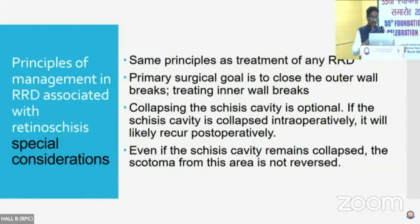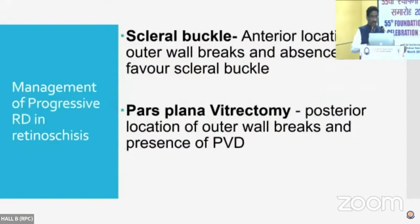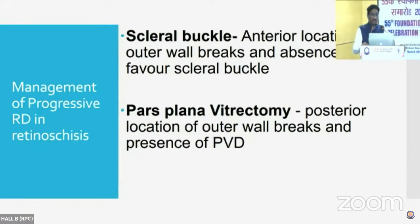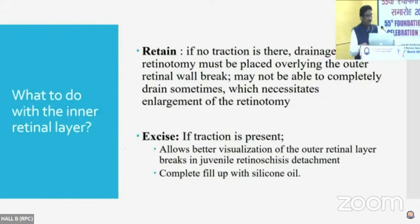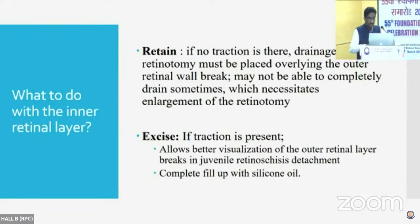Collapsing the retinoschisis cavity is optional, but even if you collapse it on table, it may still recur in the postoperative period. The techniques you can use are scleral buckling or pars plana vitrectomy. If the outer retinal wall break is very anterior, then you can consider a scleral buckle. However, if there is PVR or a posterior location of the break, then you can consider pars plana vitrectomy. If there is no traction on the inner retinal layer, one can consider retaining the wall and make a drainage retinotomy above the outer retinal wall to drain both fluids. However, if there is traction present, it is better to excise the retinoschisis cavity wall.